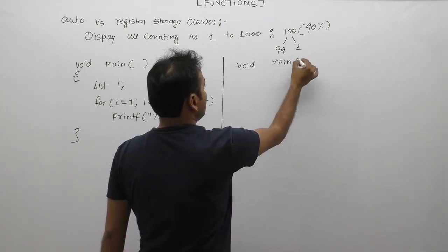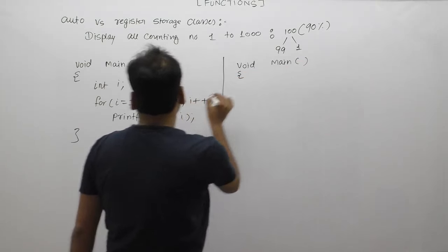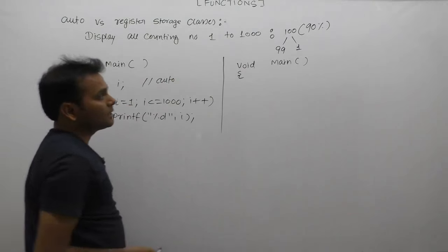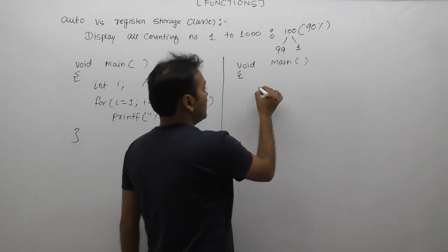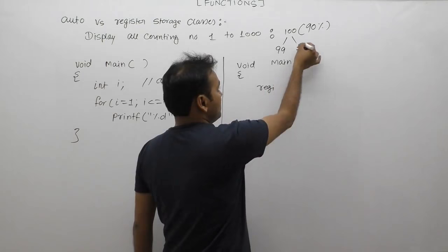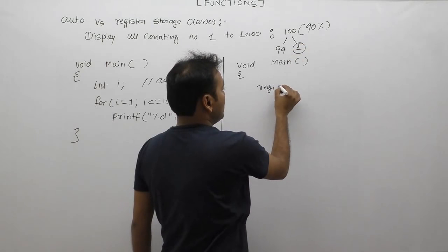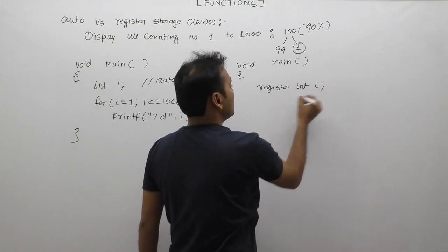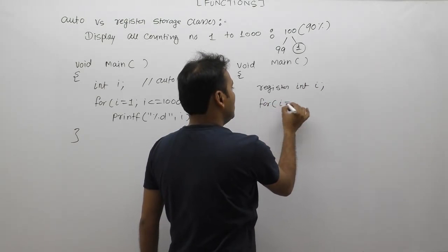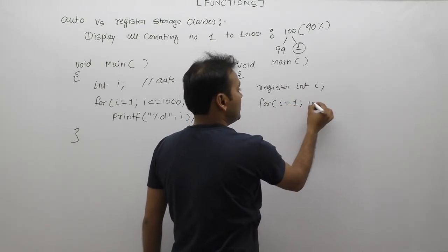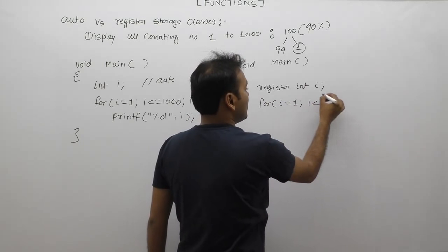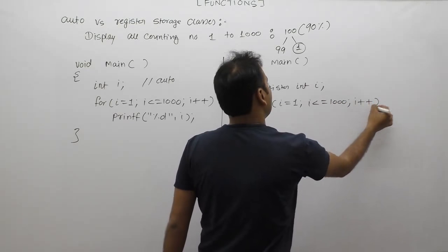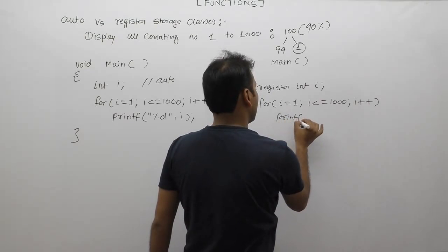In the previous case, no storage class was applied to i, so by default i has auto storage class, meaning i is created inside the stack area. But in this case, that one student declared variable i using the register storage class. The logic is exactly the same as the previous code — only the storage class of i is different. The loop runs the same way and printf displays the value of i.